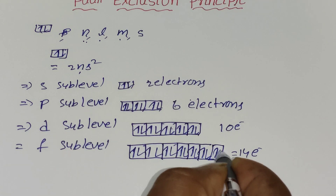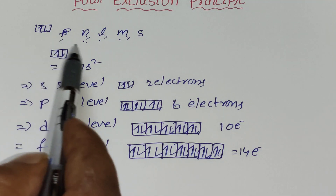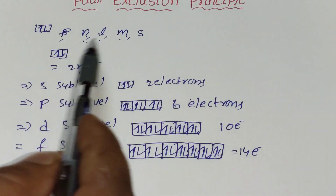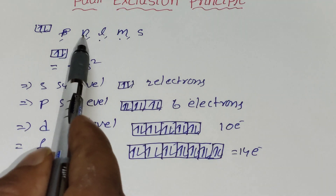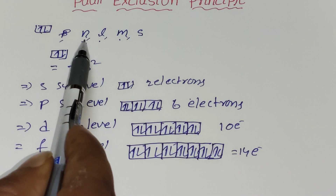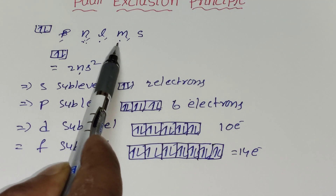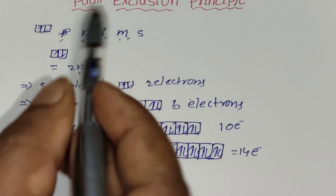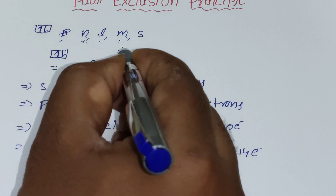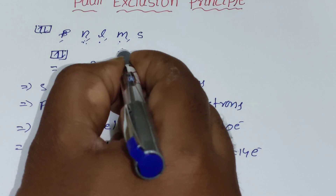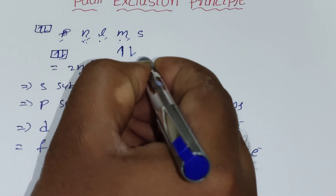So, according to Pauli's Exclusion Principle, no two electrons can share the same four quantum numbers. If electrons are in the same atom, the principal quantum number, angular momentum quantum number, and magnetic quantum number may be the same, but the spin must be different — because an orbital can have only two types of spin: clockwise and anticlockwise.